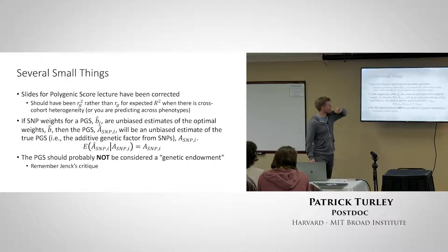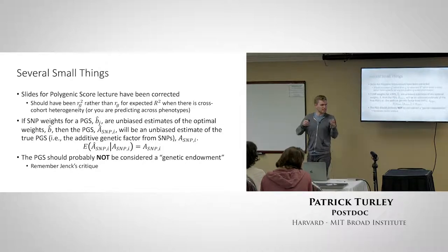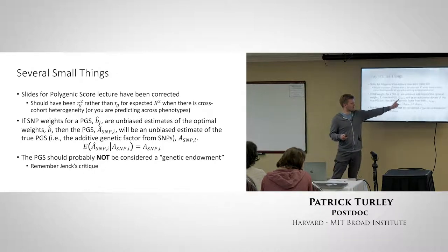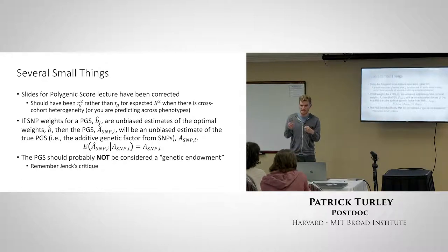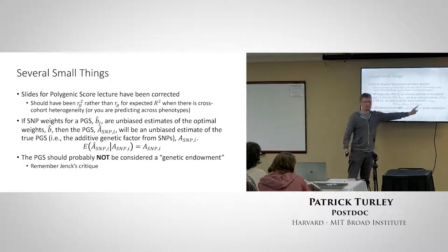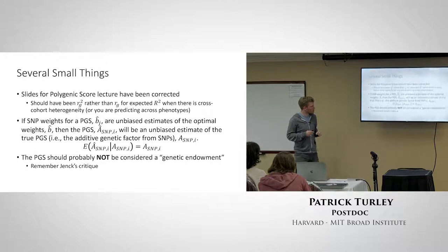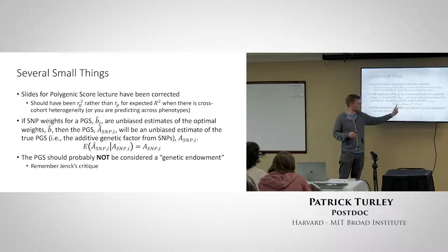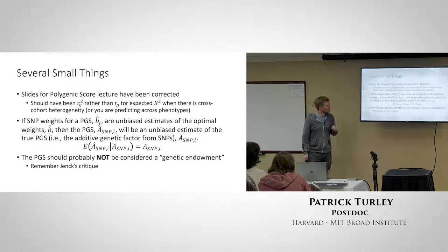Here's one point that Dan wanted me to stress: if the weights we're using to build our polygenic score — these B-hats — are unbiased estimates of the correct Bs, then the polygenic score A-hat is an unbiased estimator of the true PGS. So even though our polygenic scores lead to attenuated estimates in our regressions, the expected value of these scores should be approximately what the true polygenic score is. The polygenic score will be right on average even though it has additional noise attached.